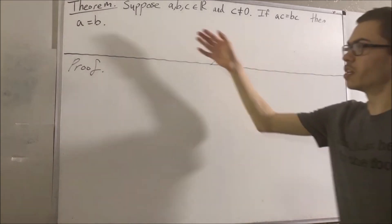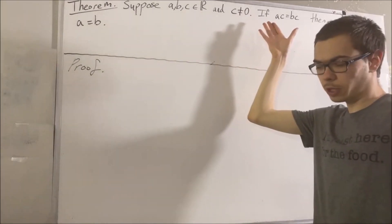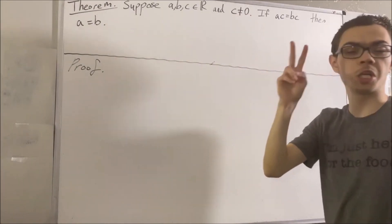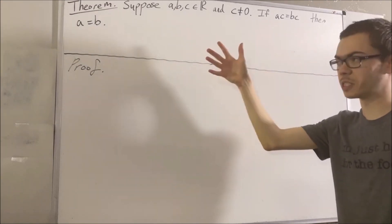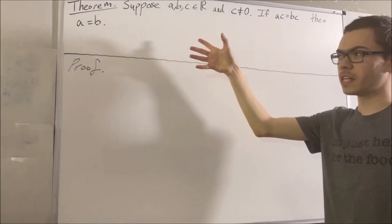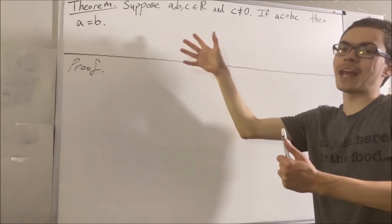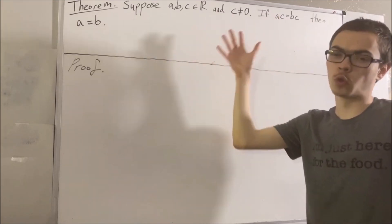So in proving this, we are going to use two facts which come from the field properties of the real numbers. The first is that for every real number A, A times 1 is equal to A.